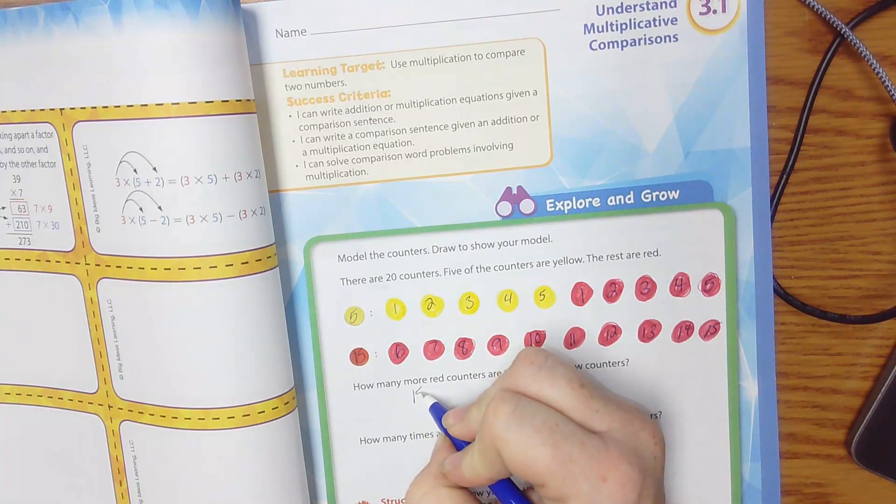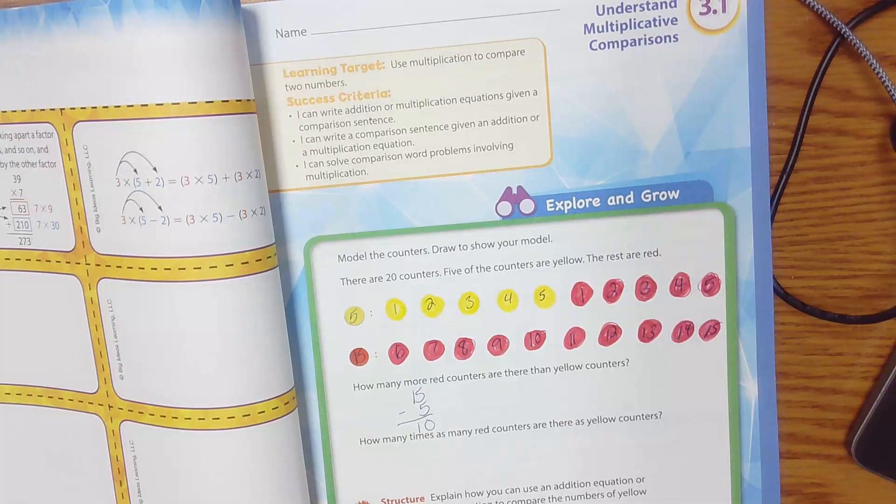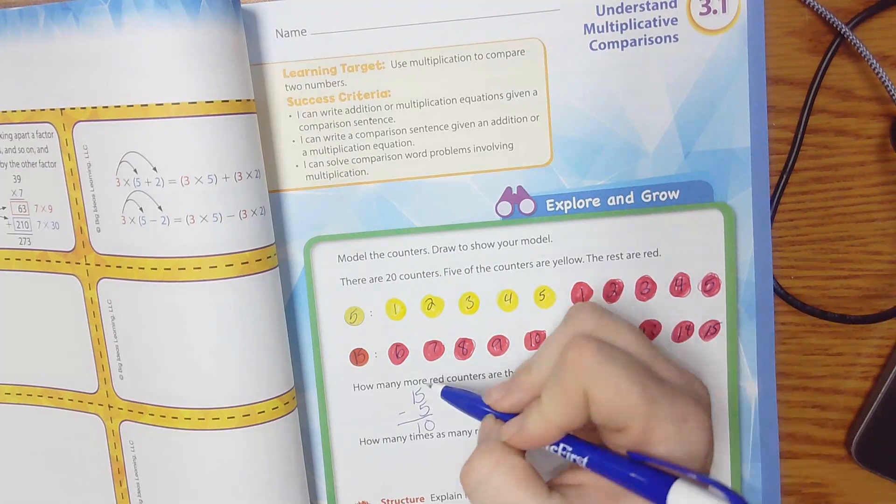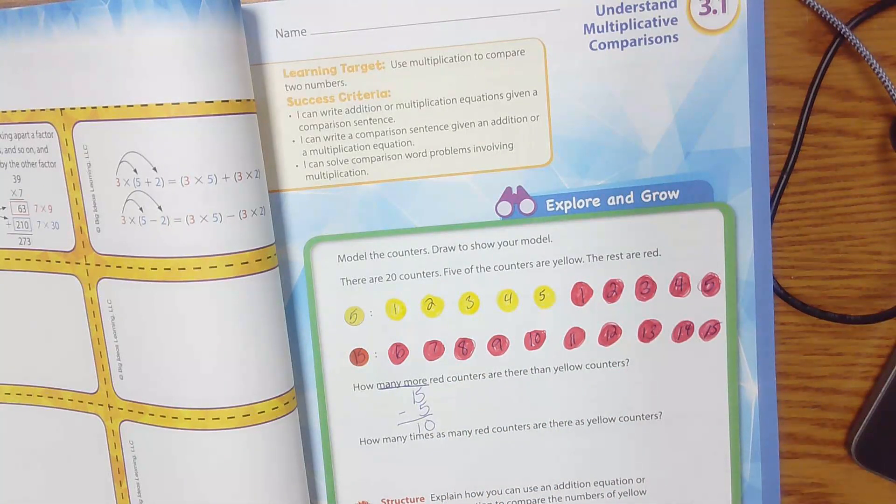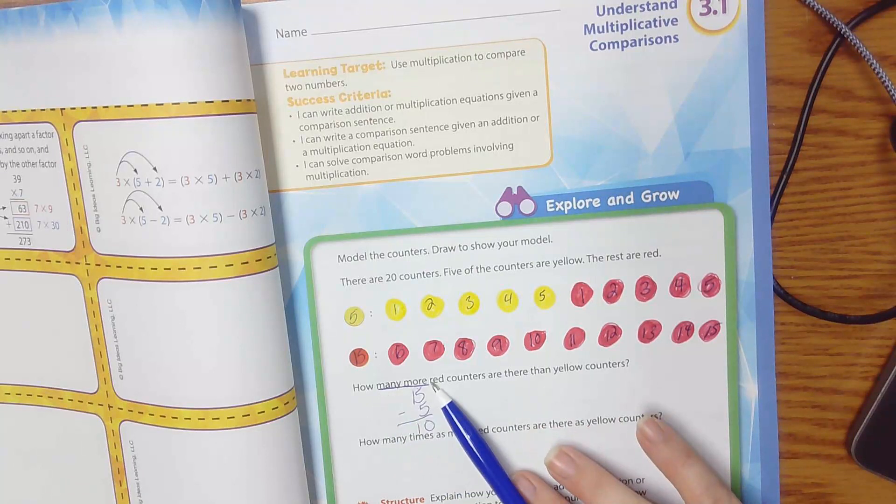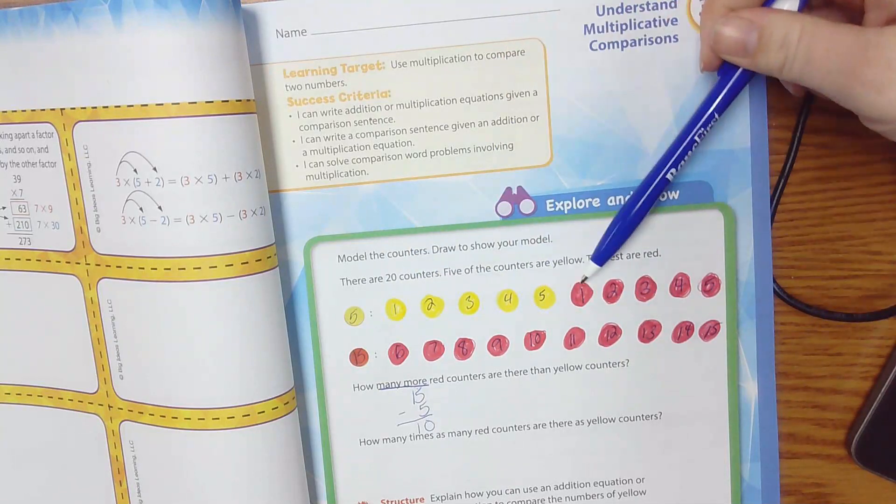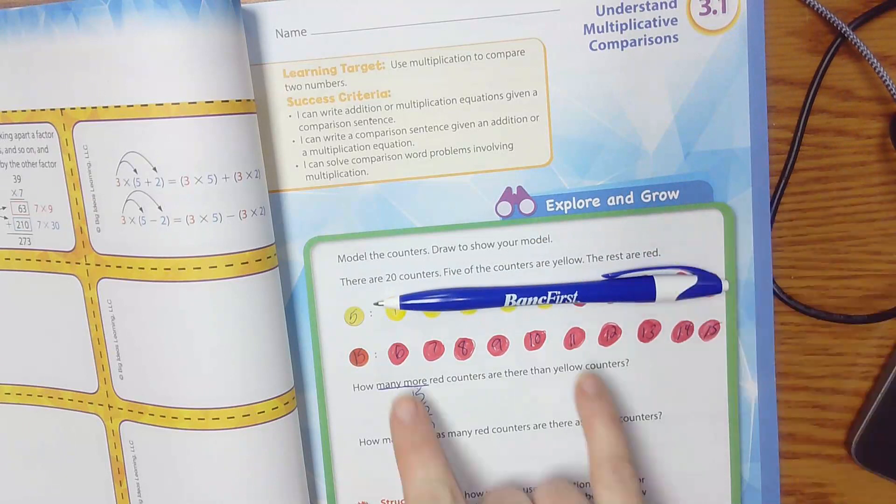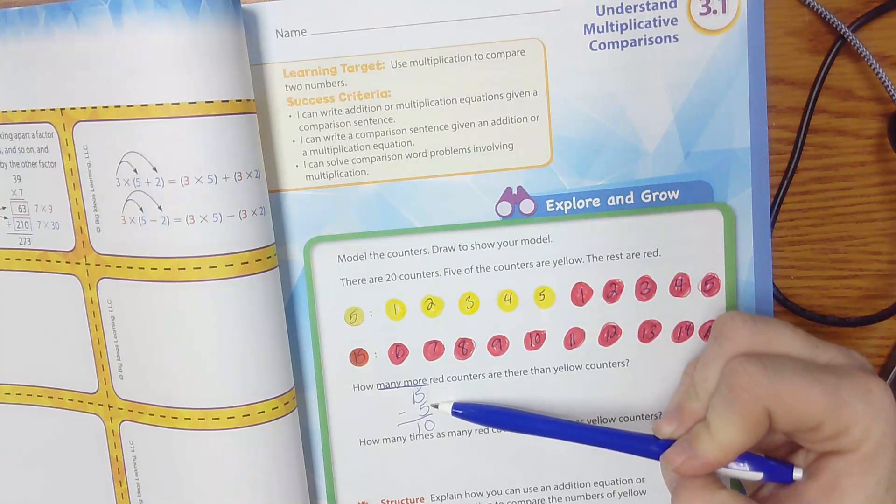So we have 15 minus 5 is 10. So the part that I'm really paying attention to is how many more. So when you're reading word problems, make sure you're really paying attention to each word. Even though more sounds like a small word, it's really important in this. We're not saying how many red or how many yellow, we're saying how many more red. So if I see here, there are 5 yellows and 5 reds, they cancel each other out and I'm still left with 10 red. I can also just write it as a subtraction problem. 15 minus 5 is 10.